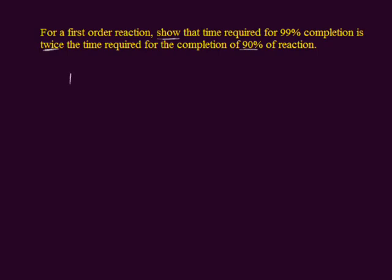The formula is: t is equal to 2.303 divided by k, where k is the rate constant, multiplied by log of the initial amount of the reaction divided by the final amount of the reaction.